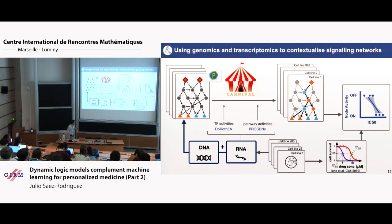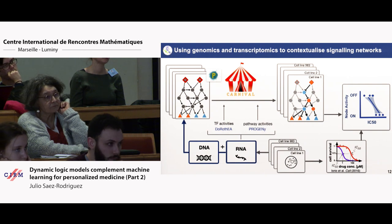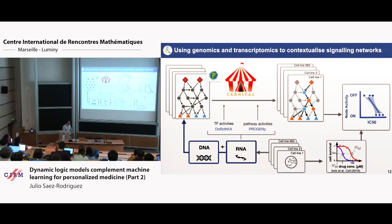You could also refine this further by using genomic data to contextualize your starting network. These pathway resources normally don't give you cell-type-specific information — they tell you this protein activates this protein, but not whether this is in a liver, brain, or breast. But you can use genomic data to contextualize them before running causal inference. In our case, we use mutational data that can tell us if specific nodes are broken by a mutation, so they don't work. Or if you have RNA data with zero counts, it's very likely there is no protein, so we remove those nodes.